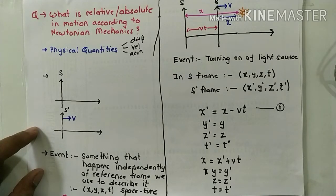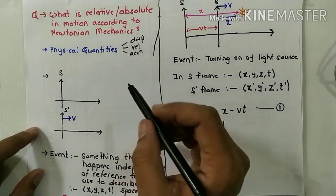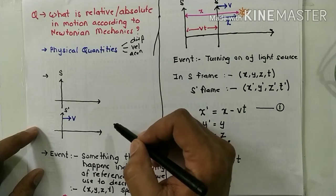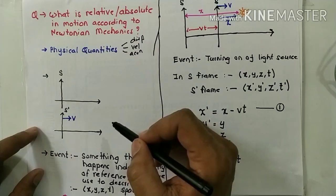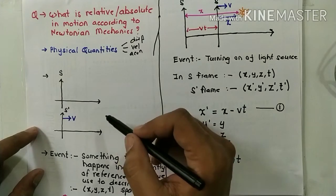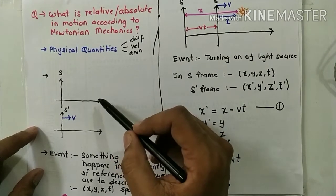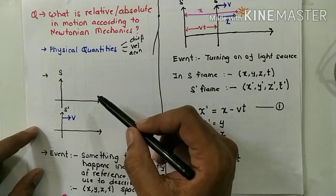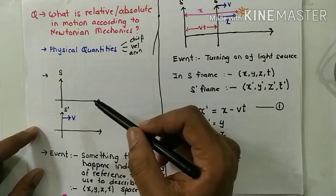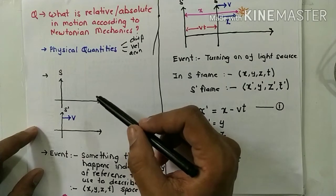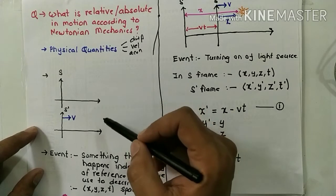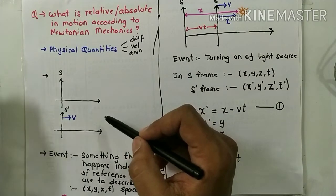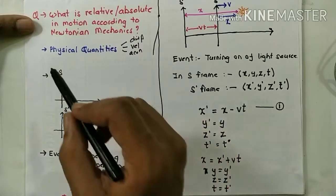To understand this, let us take an example. In this example, we are going to consider two frames of reference. Now remember, frames of reference means a coordinate axis — like we see in the diagram where x and y axis are there, z axis is also there, as well as a time axis or clocks. Let us take two such reference frames. One reference frame, let us call it S.